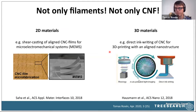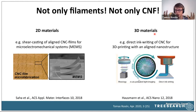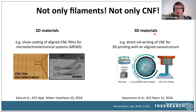Once you dry the gel that is formed, you can create very strong and stiff filaments. And it's not only filaments and not only CNF — there are also various examples in literature for 2D materials such as films or barriers where you can align these particles. For example, shear-cast aligned CNC films for micromechanical systems, and it has also been demonstrated in 3D printing. Both examples use hydrodynamic shear forces to achieve a non-random distribution on the nanoscale.